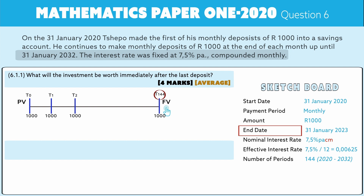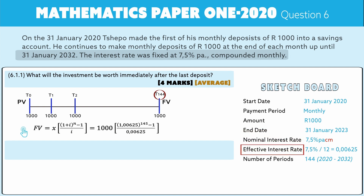Because it's regular payments, we use the future value formula for an annuity: FV = X × [(1 + i)^n − 1] / i. Here n represents the number of payments inside the annuity, X is the amount of the regular payment, and i is the effective rate per period. So X = 1000, i = 0.075/12 = 0.00625, and n = 145. The formula becomes: 1000 × [(1.00625)^145 − 1] / 0.00625.